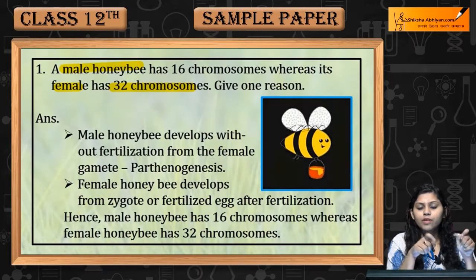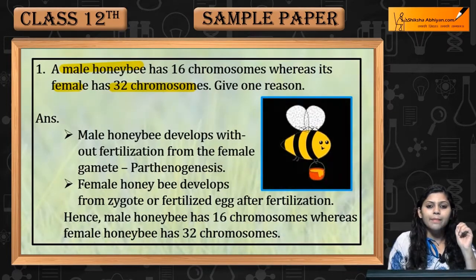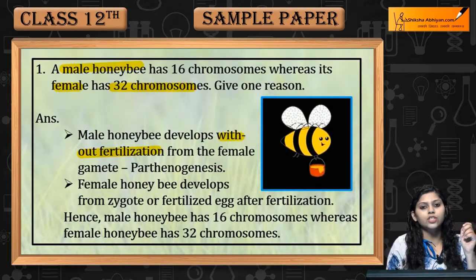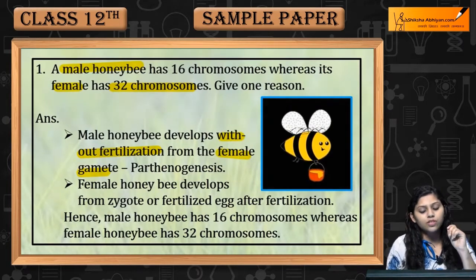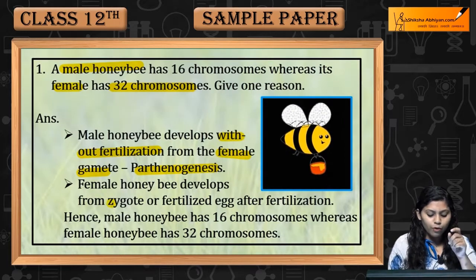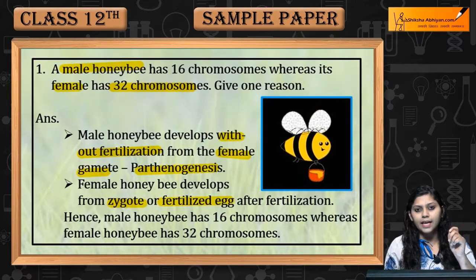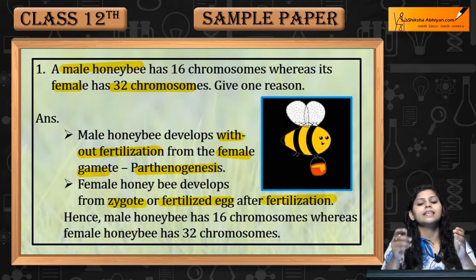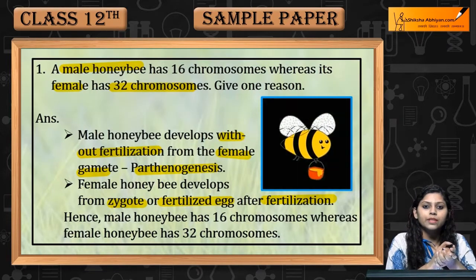Male honey bee develops without fertilization from the female gamete, like Parthenogenesis, and therefore has 16 chromosomes. Whereas the female develops from a zygote, which is a fertilized egg after fertilization, and therefore has 32 chromosomes.